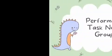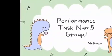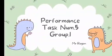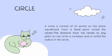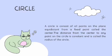Hi Mr. Ragon, we are group 1. Let's talk about circles. A circle consists of all points on the plane equidistant from a fixed point called the center. The distance from the center to any point on the circle is constant and is called the radius of the circle.